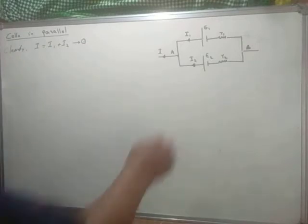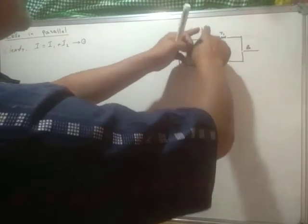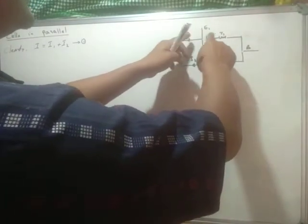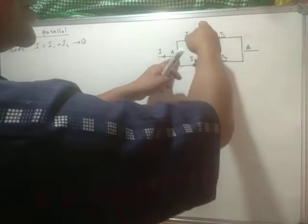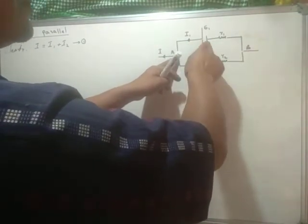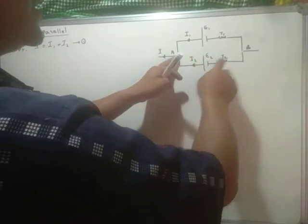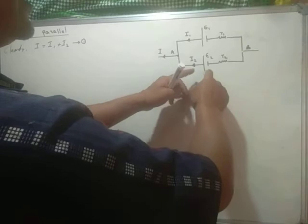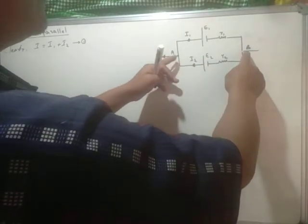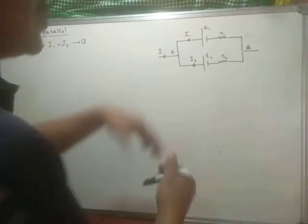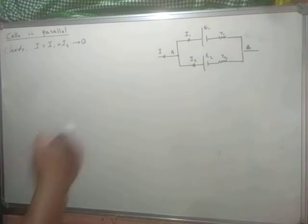Now let us look at the potential difference across each cell. The potential difference of the first cell is the potential difference between point A and point B, because this plate is connected here and this is connected to B. Similarly, the potential difference of the second cell is also the potential difference between point A and point B. Therefore, the potential difference of cell number 1 and cell number 2 is the same.